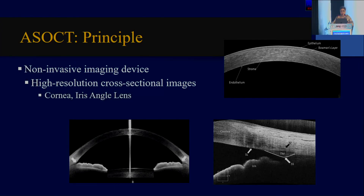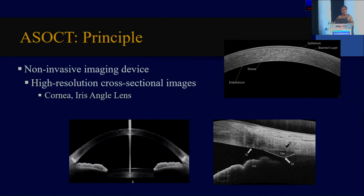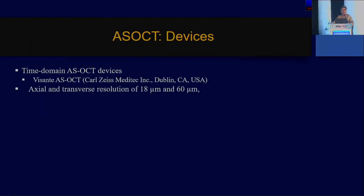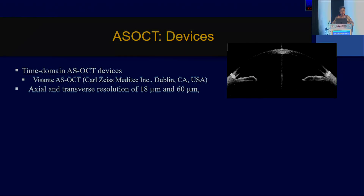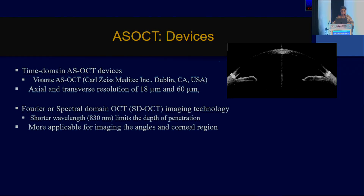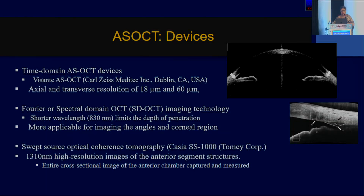Coming to the anterior segment OCT — it's non-invasive and gives you high-resolution cross-sectional images of the cornea, the iris, the angle, and also the lens. Devices started with the time domain, like the Visante, then went on to the Fourier or spectral domain, which you can still do on your Cirrus or Heidelberg. But in the clinic, what we found really useful is the swept source at 1310 nanometers — the Casia — which gives a quick cross-sectional image of the angle.